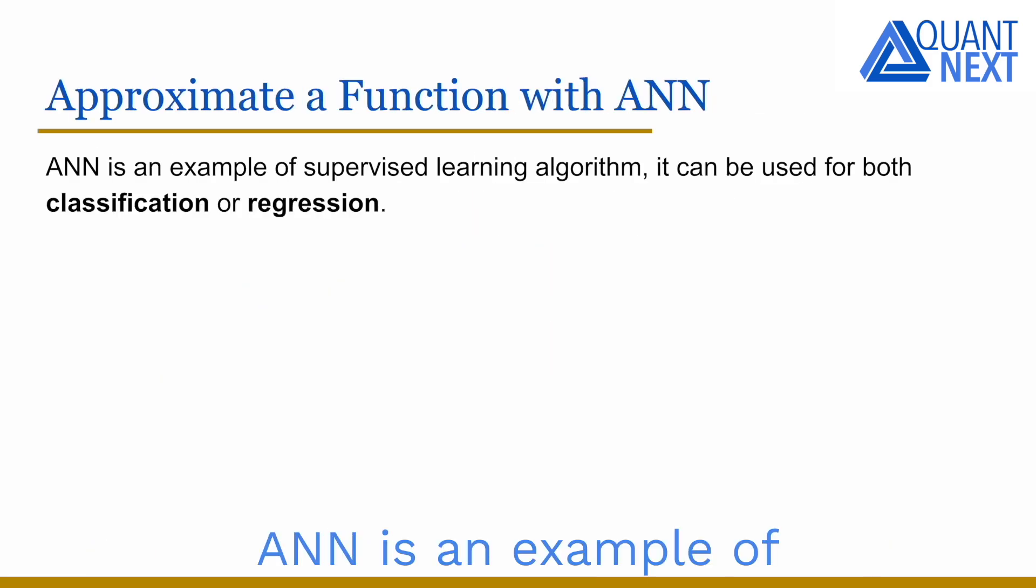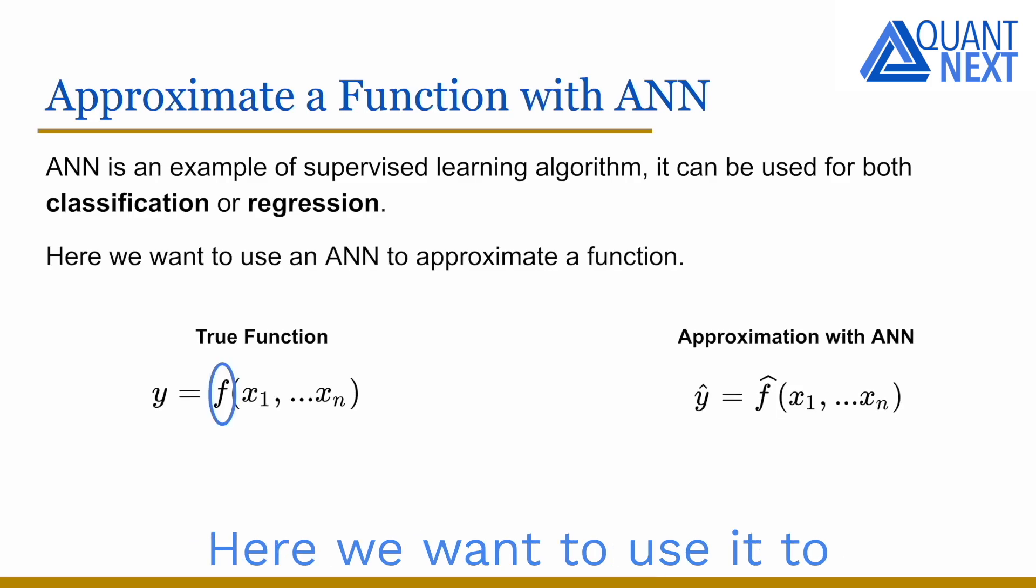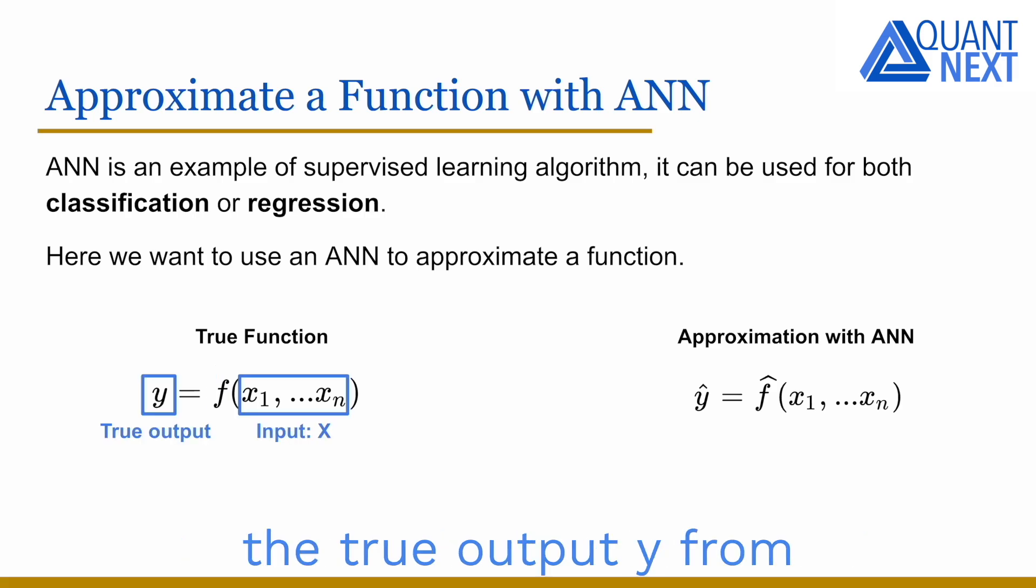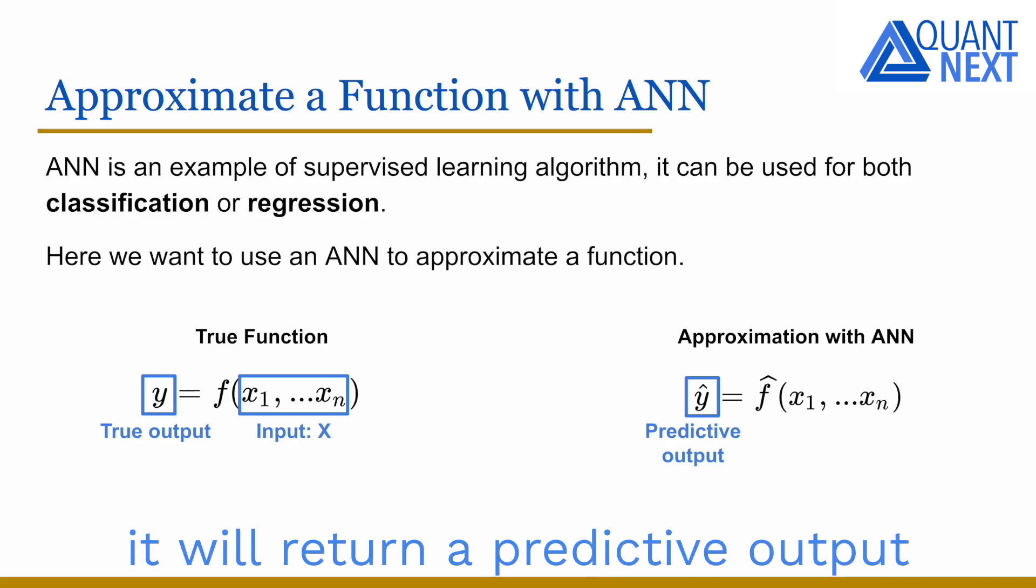Artificial neural networks are an example of supervised learning algorithms in machine learning. They can be used for both classification or regression. Here we want to use it to approximate a function. We know the true function that will return the true output y from the input x, and we want to approximate it with the artificial neural network. From the input x, it will return a predictive output that we can compare to the true value.